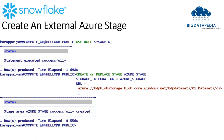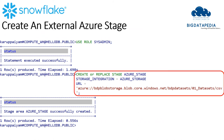Now you can create an Azure external stage. The command is CREATE OR REPLACE STAGE with the stage name azure_stage, and set storage integration as azure_storage - this is the integration we provided access to the Snowflake application. You also provide the URL with the entire file path.